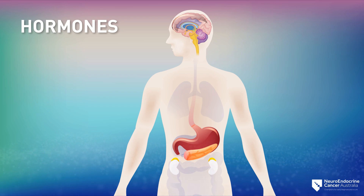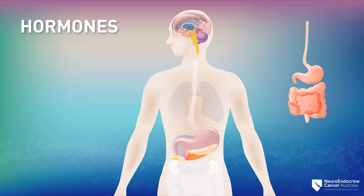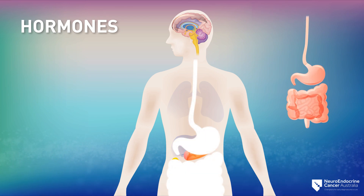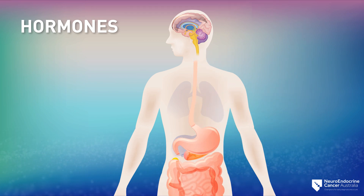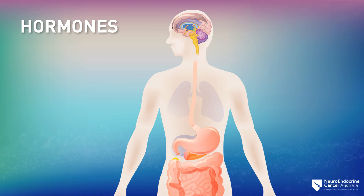Somatostatin is found in many organs, but mostly in the gastrointestinal tract and pancreas. This hormone acts as the regulator and helps balance the right amount of growth hormone, insulin, and gastrin that is released.